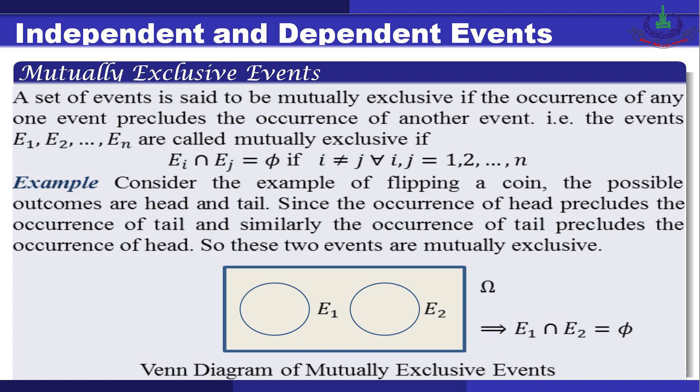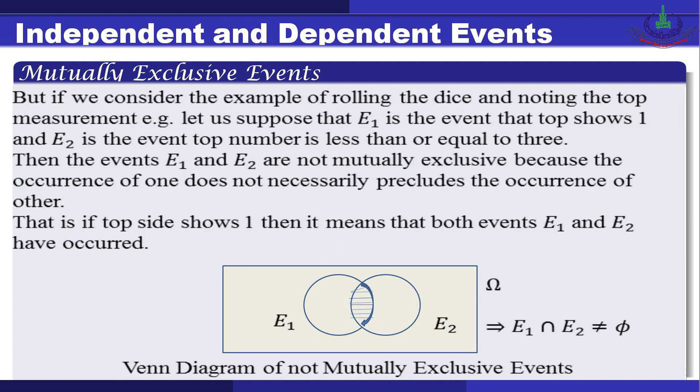For example, consider flipping a coin. The possible outcomes are head and tail. Since the occurrence of head precludes the occurrence of tail and vice versa, these two events are mutually exclusive. In the Venn diagram, E1 and E2 are represented by two non-overlapping circles inside the rectangle omega, confirming that E1 intersection E2 equals the empty set phi.